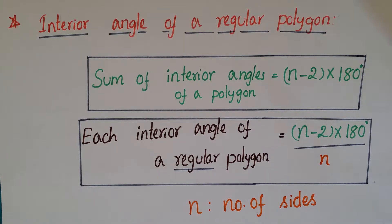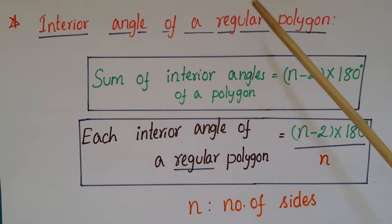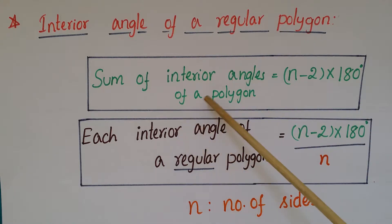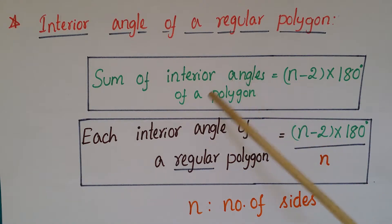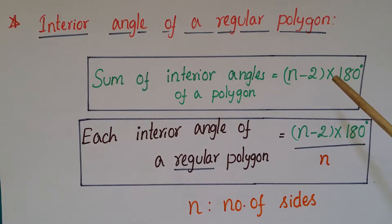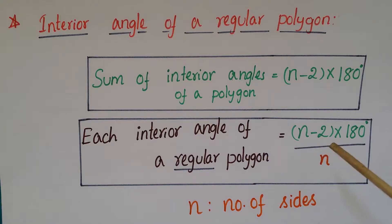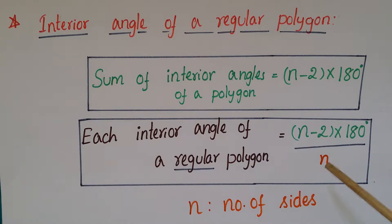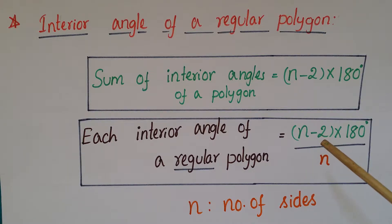Hello everyone. Today I am going to explain how to find an interior angle of a regular polygon. We all know that the sum of interior angles of a polygon is (n minus 2) into 180 degrees. Using this formula, we can find each interior angle of a regular polygon, which is (n minus 2) into 180 divided by n, where n is the number of sides.